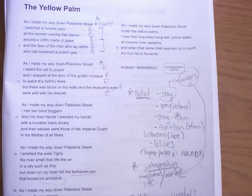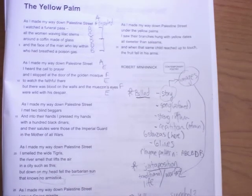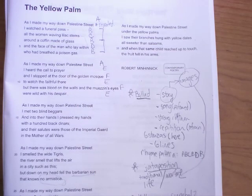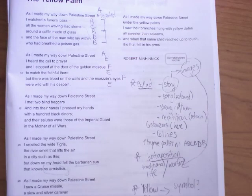All right, let's just refocus for a second. Now we need to look at what this poem, The Yellow Palm, this ballad, what is the story or the set of images that are being presented to us, and what's actually going on here. So let's take a look.